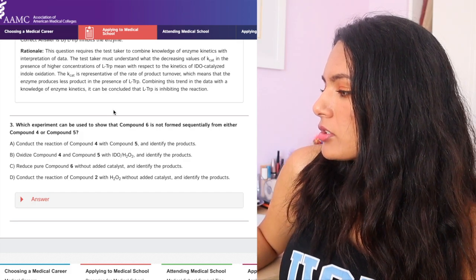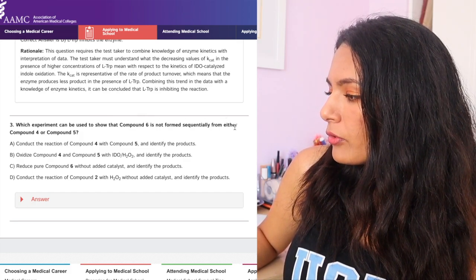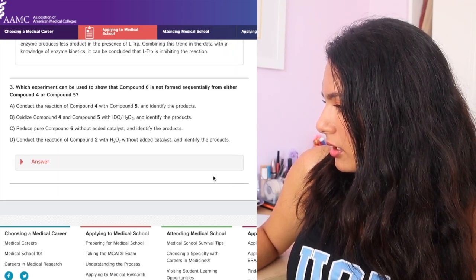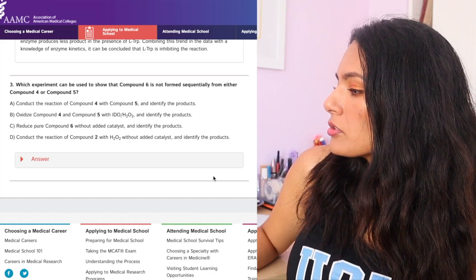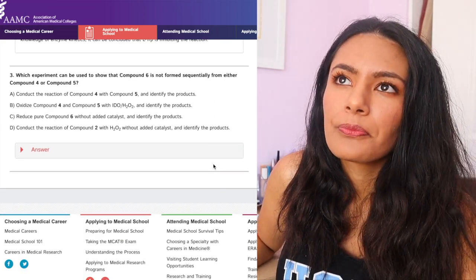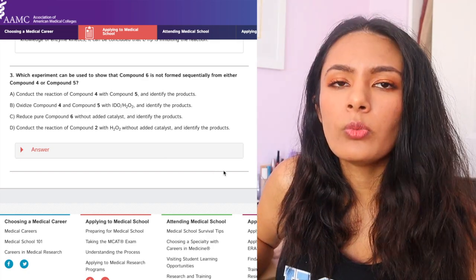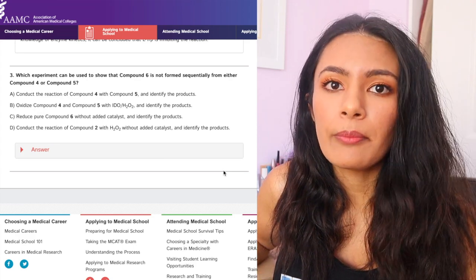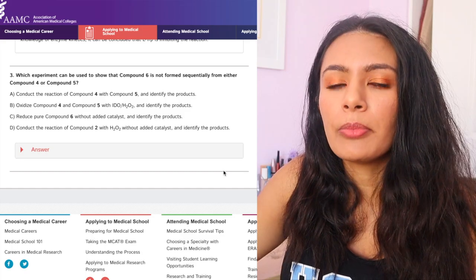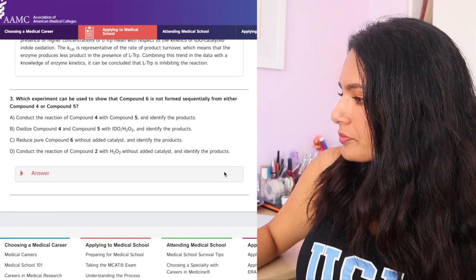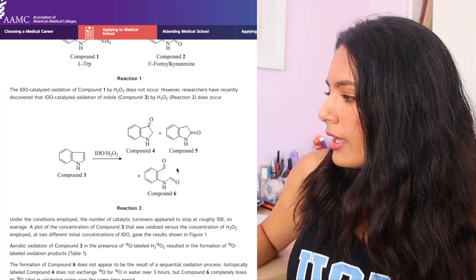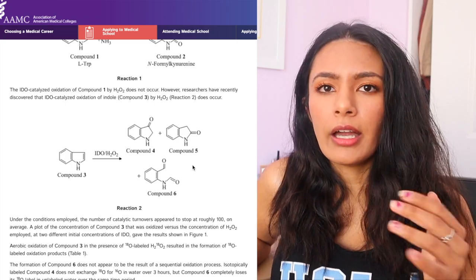Yeah, number three. Okay. Which experiment can be used to show that compound six is not formed sequentially from either compound four or compound five? Okay, so I'm going to go back and look at reaction two that has all of those compounds. And it says compound six is not formed sequentially from either compound four or compound five. So this question sort of sounds like almost like an experiment analysis because they're asking you which experiment could you do to show that this does not happen, right? They're not asking you about something that they did in the experiment. They're asking you to kind of think outside the box. Try to hypothesize what would happen if you did this hypothetical experiment.